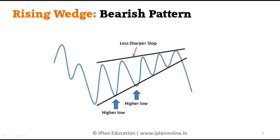The upper slope is a less sharp slope and the lower slope is a sharper slope. This makes a wedge pattern where we wait for a breakout. If there is a downward breakout, we can go into a short position.